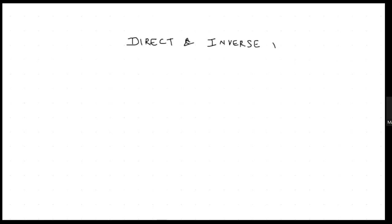If you want to see the solution of earlier chapters of Class 8, the chapter names are: Rational Numbers, Square and Square Roots, Cube and Cube Roots, Exponents, Playing with Numbers, Algebraic Expressions, Factorization of Algebraic Expressions, Percentage and its Application, Surface Area and Volume, Probability, and so on. You can go to the playlist where all solution links are available for each chapter and each exercise.